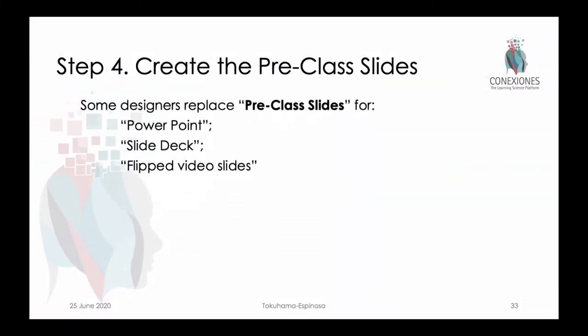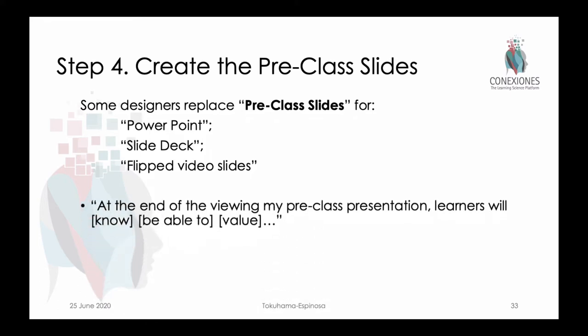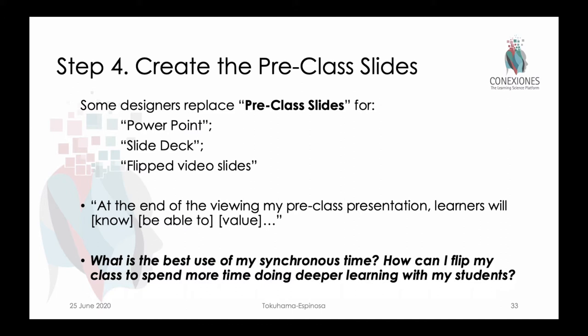The fourth step is to create the pre-class slides. Since this is a flipped class, these are the slides used to make the pre-class video. A key step is to keep in mind learner outcomes as we do this stage of planning. Our guiding question is: what is the best use of my synchronous time? The idea is to offload dates, facts, formulas — that knowledge-based information that's vital but that you don't want to spend synchronous time dictating to students. Our best use of face-to-face time might be debate, discussion, clarifications, going deeper into information, or applying skill sets.